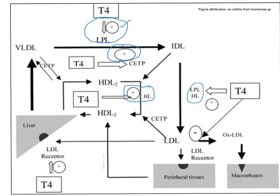T3 and T4 also decrease the oxidation of LDL — they have a negative effect on LDL oxidation. Normally, excess LDLs get oxidized; oxidized LDLs are taken up by macrophages, which become foam cells, initiating atherogenesis. Therefore T3 and T4 prevent atherosclerosis.